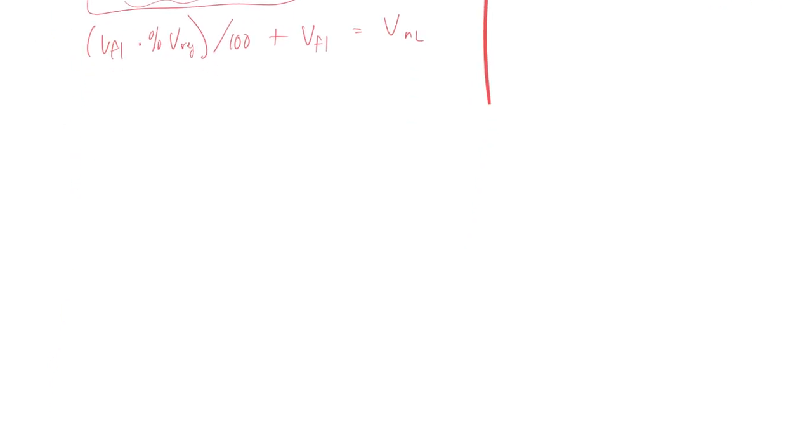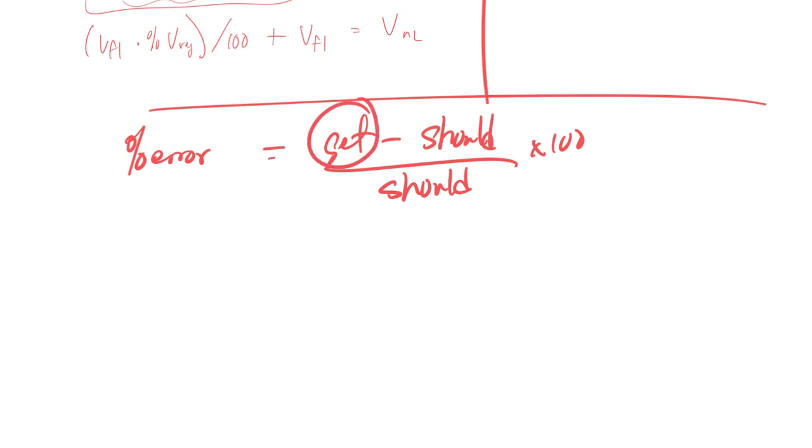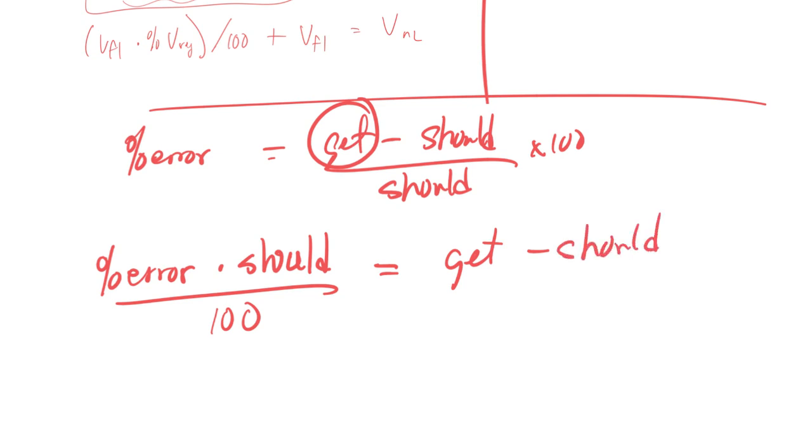We do one in chemistry that's similar, percent error. And we have what you get minus what you should have got divided by what you should have got times 100. So if I'm wanting to solve for this, I would do the exact same thing as I did up there. It'd be percent error times what you should have got divided by 100 equals what you get minus what you should have got, and then add should to each side. So it's the same kind of thing.